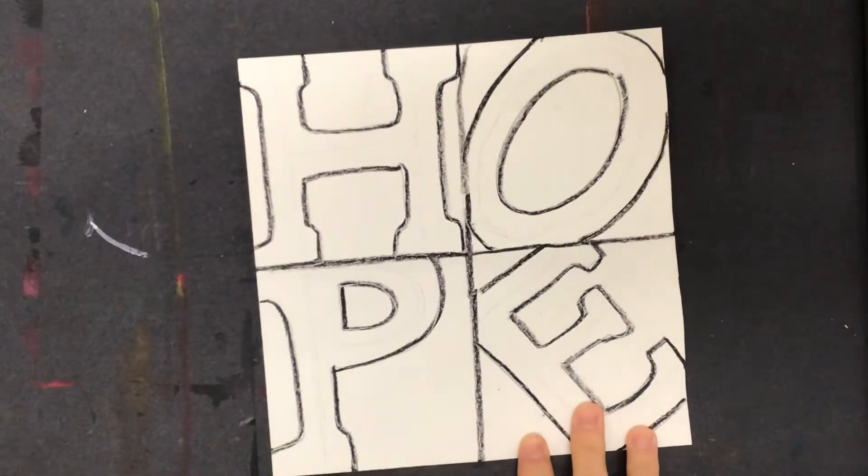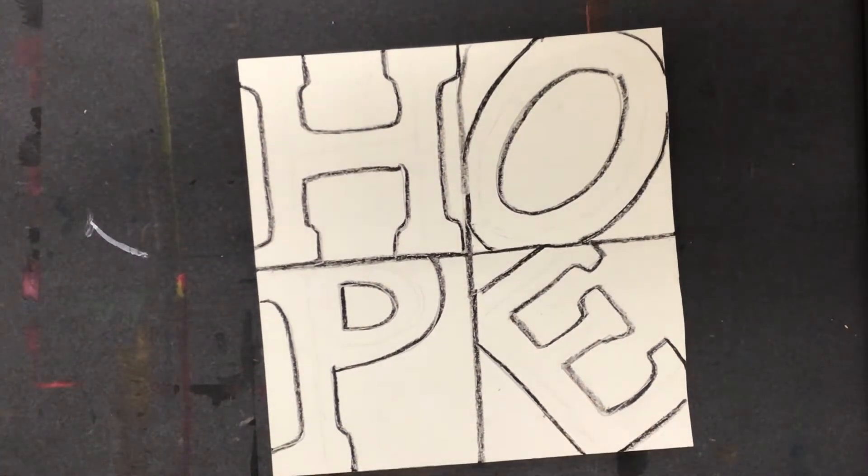So next I want to add color, but I want to think about what is the most effect I can get with my use of color. How can I really get these letters to pop out?